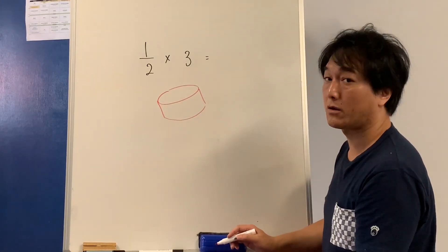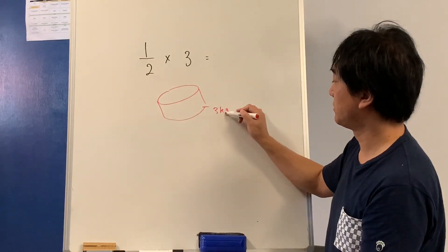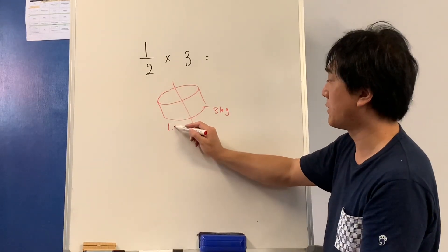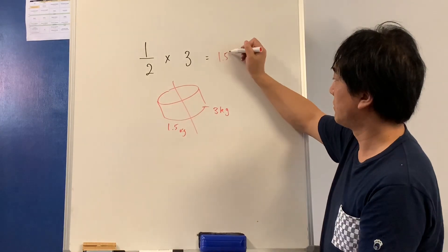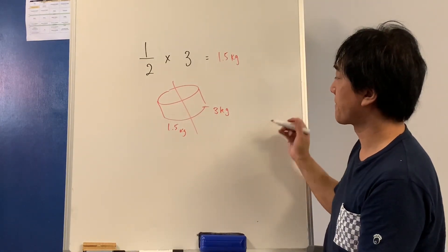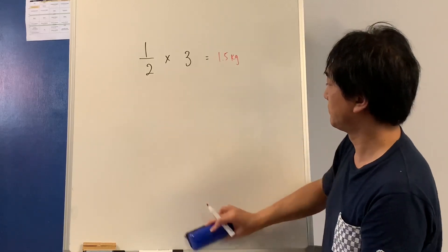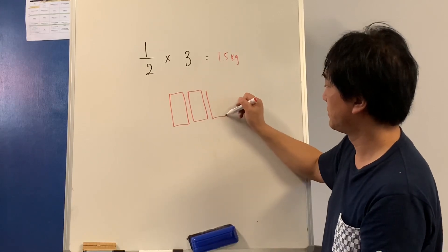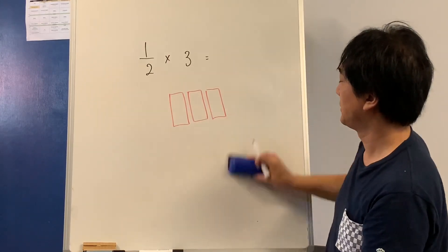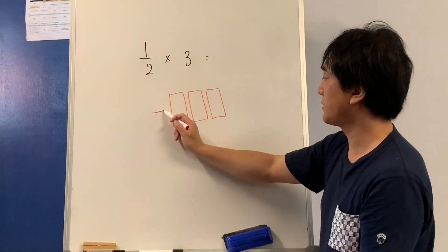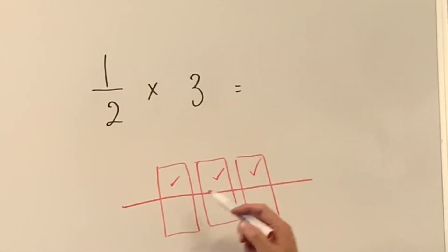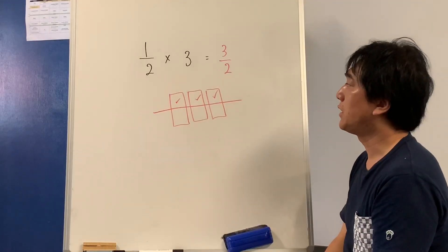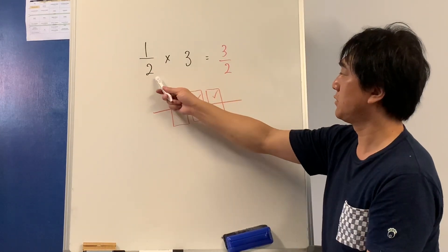Let's say this cake is 3 kilograms. I'm going to have half of it — half of that is 1 and a half, or 1.5 kilograms. Or think of 3 chocolate bars: 1 half of them means 1 half, 2 halves, 3 halves. I can see a pattern here — the denominator stays.